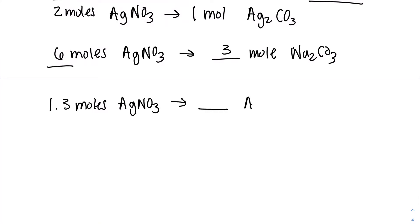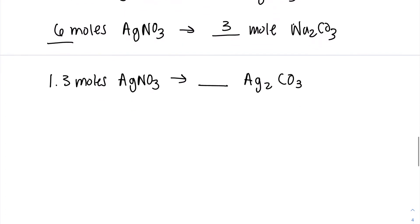2 moles of AgNO3 over 1 mole of Ag2CO3 equals 1.3 mole AgNO3 over x moles of Ag2CO3.